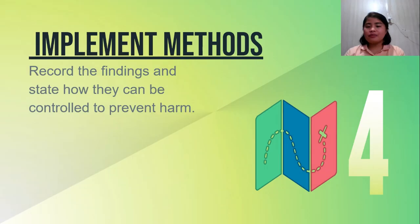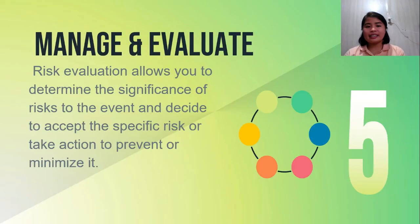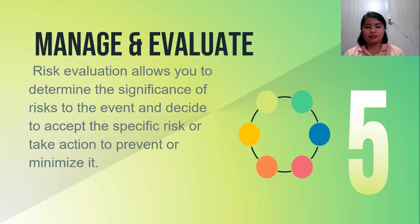Step four: implement methods. Record findings and state how they can be controlled to prevent harm. Step five: manage and evaluate. This allows you to determine the significance of risk to the event and decide to accept the specific risk or take action to prevent or minimize it.